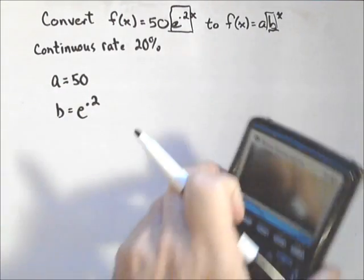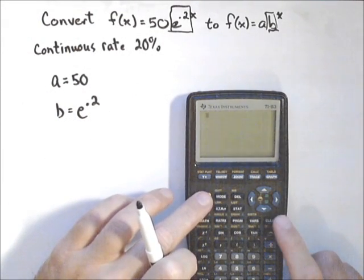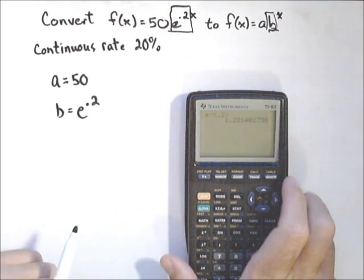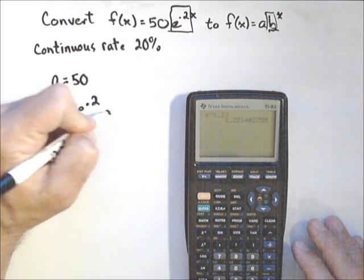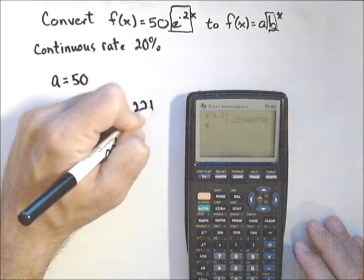So we'll use our calculator now to help us convert, and what we're going to do is E to the 0.2, and we get that B is approximately 1.2214.